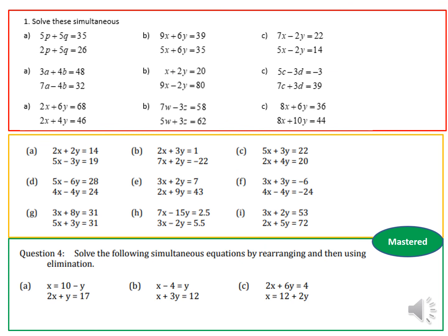Now have a go at these on your own. The red section is a recap from the previous lesson where the coefficients are already the same. If you're in set 4, do one or two from the red section then move on to amber and green. If you're in set 5, spend a bit more time on the red section then move on to amber. Once you are done, take a picture and upload it onto Class Charts.